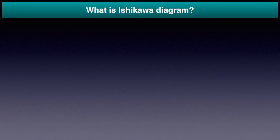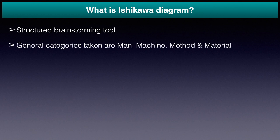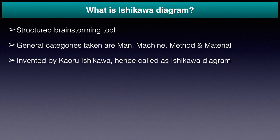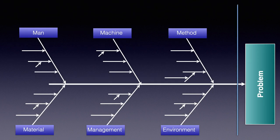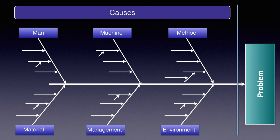What is the Ishikawa Diagram? It is a structured brainstorming tool. Categories generally taken are Man, Machine, Method, and Material, but it depends on the problem. The Ishikawa Diagram was developed by Kauru Ishikawa, hence called the Ishikawa Diagram. This tool is also known as the Fishbone Diagram and the Cause and Effect Diagram. It is called the Fishbone Diagram since it looks like the bones of a fish, and the Cause and Effect Diagram because causes are shown on the left side and the effect — that is, the problem — is shown on the right side. This tool is used to identify the potential causes of a problem.